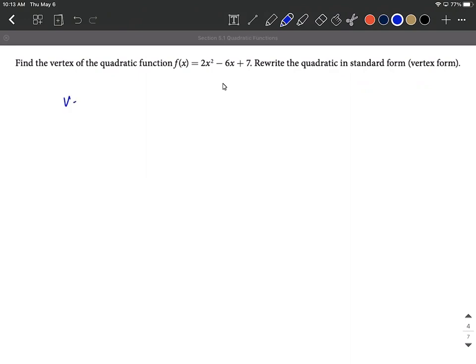To find the vertex, it's nice to know this formula that h is going to be negative b over 2a. So how we locate a and b, a is going to be our first value here, b and c. Just like ax squared plus bx plus c, like the quadratic formula, same sort of idea.